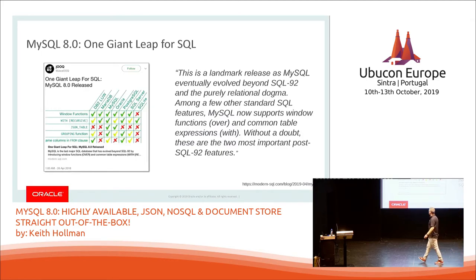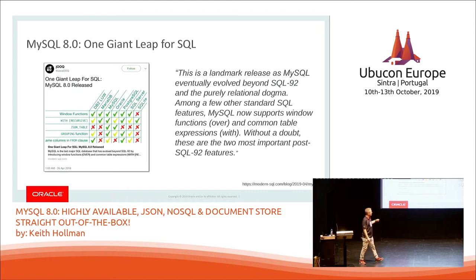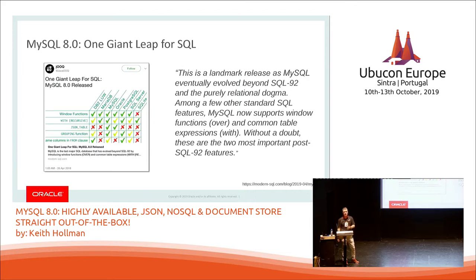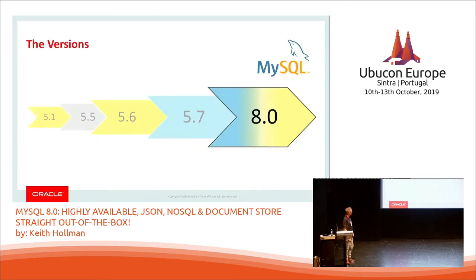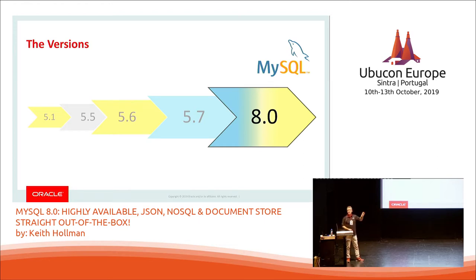So it's a giant leap, as it says there, MySQL 8. One of the key things is SQL 92, and we've got window functions and common table expressions — a key thing there to move towards standardisation. So 5.1, 5.5, 5.6, 5.7, big change in 8.0. Change of the numbering means it's a big change.